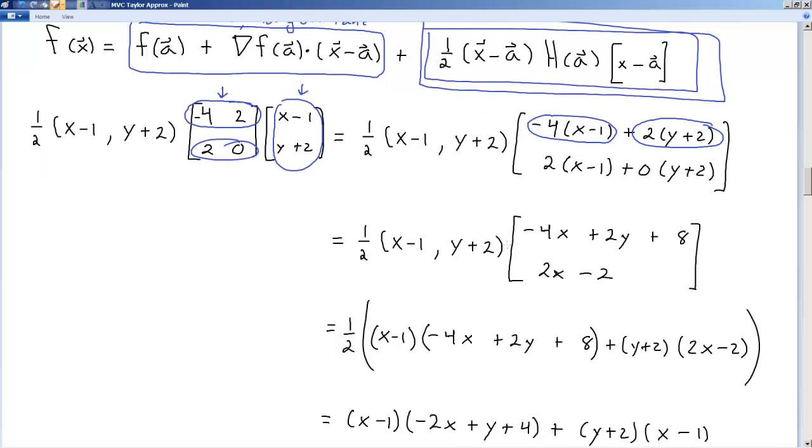Now, once I do that, this again is a vector product. So I'm going to take x minus 1... I'm sorry, it's a dot product. I'm dotting these two vectors. So x minus 1 times that. That's where this term comes from down here. And then y plus 2 times this. And that's where this term comes from down here.